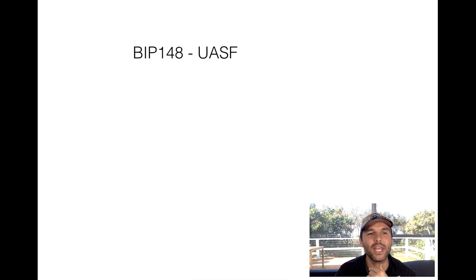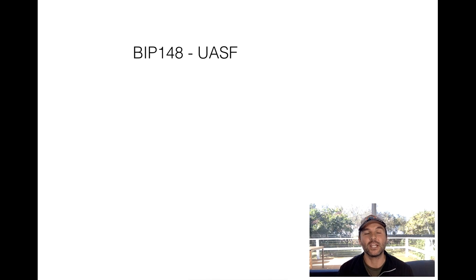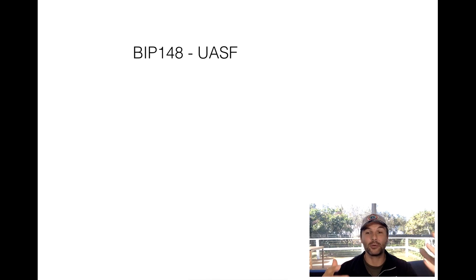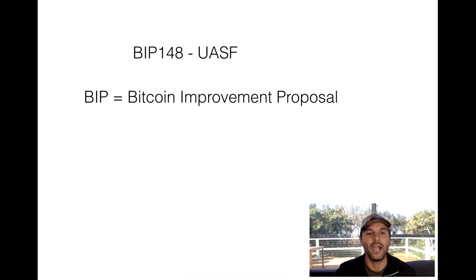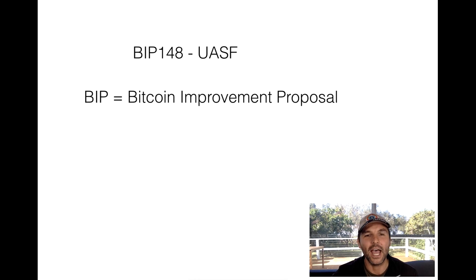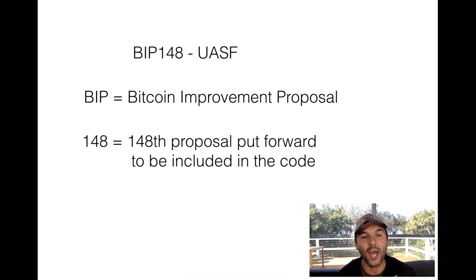BIP actually stands for Bitcoin Improvement Proposal. Bitcoin is open source software — anyone can actually contribute, and it's up to the community to basically accept or reject all the proposals that are put forward about what goes in the code. That's literally all a BIP is — it's just an improvement proposal. Not all of them get accepted. Number 148 just means this is the 148th proposal put forward to be included in the code. That's it.